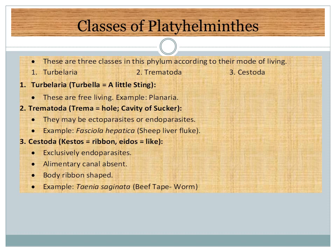Trematoda is the second class — 'trema' means a hole or cavity of a sucker. They may be ectoparasites, which depend on and are harmful to the host body from the outer surface, or endoparasites, which act within the host body. Their example is the liver fluke, Fasciola hepatica. The third class is Cestoda — 'cesto' means ribbon. They are mostly endoparasites, have no alimentary canal, and their body is ribbon-shaped. Their example is the beef tapeworm, Taenia.